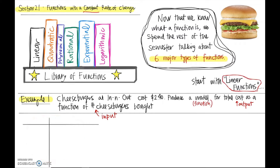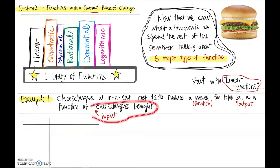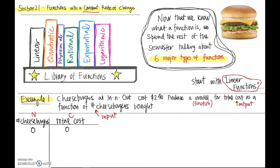In our table, we always put input values first and then output values. My inputs are number of cheeseburgers bought, and I'm going to call that variable n for number. Total cost is my output, and we'll call that c. If I buy zero cheeseburgers, that'll cost zero dollars. If I buy one cheeseburger, I know that costs $2.40.